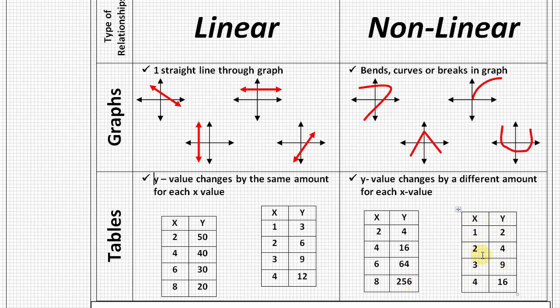On this example of another nonlinear table, our x's are increasing by 1, and then our y value goes from 2 to 4, so an increase of 2. Then from 4 to 9, so an increase of 5, and then from 9 to 16, so an increase of 7. Again, that's not changing by the same amount, although our x is. So these, when we see the y changing by a different amount, we know from just looking at the table that that's going to be a nonlinear relationship.